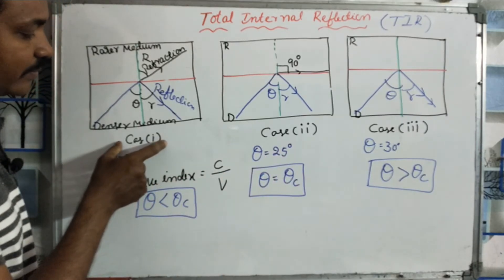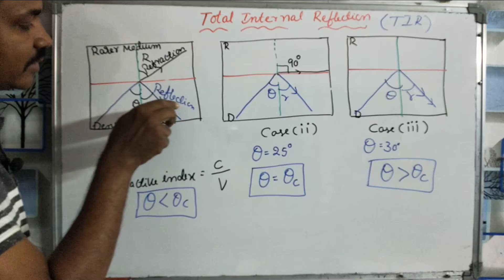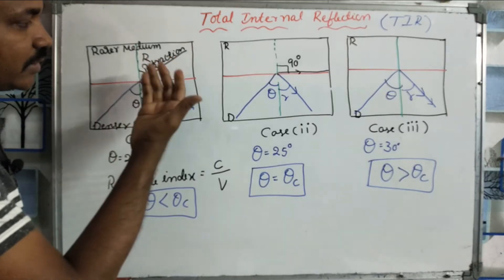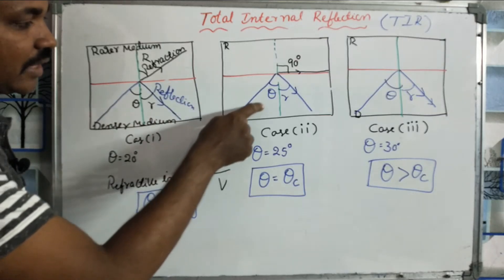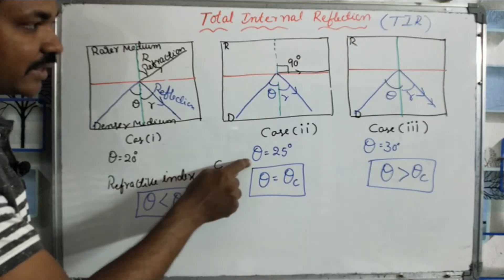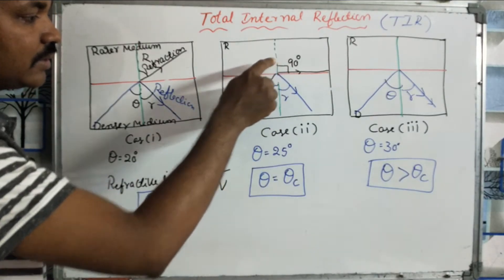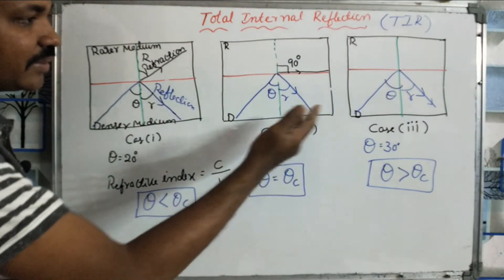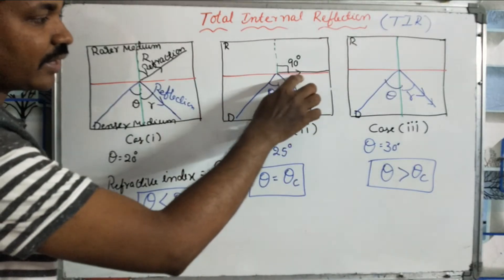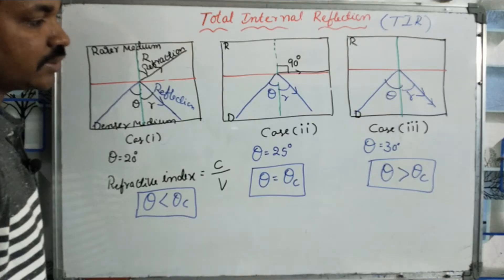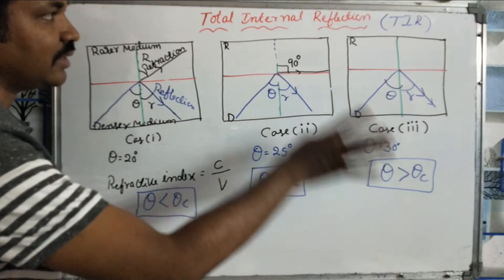Let us consider case 1: light travels from denser to rarer medium. It divides into two parts — one is refraction in the opposite medium and one is reflection in the same medium. As theta increases toward case 2, refraction maintains 90 degrees with the normal — that is the critical angle. In case 3, theta increases further and all light reflects back — that is total internal reflection.